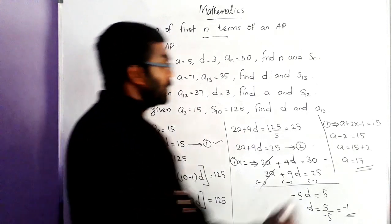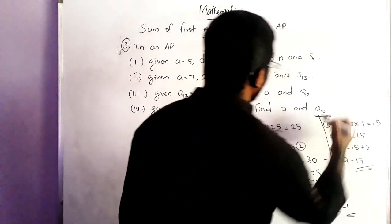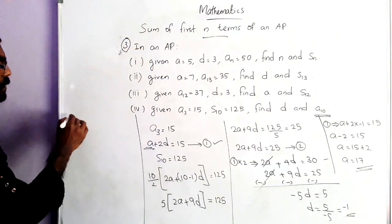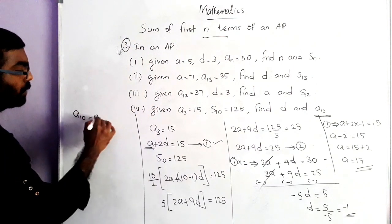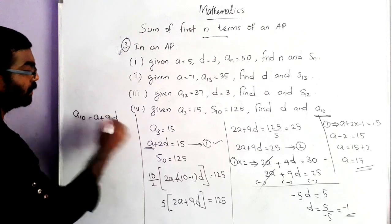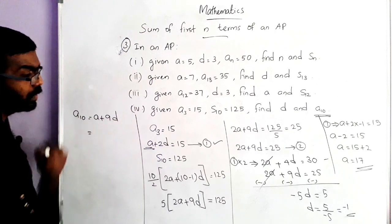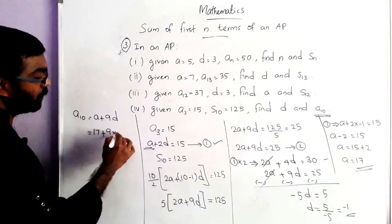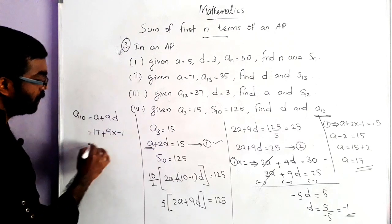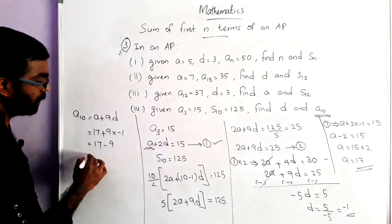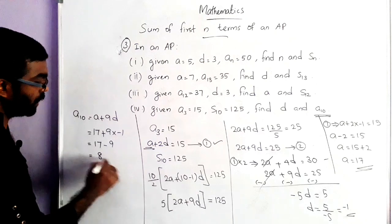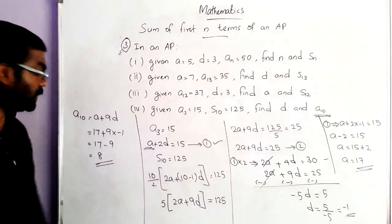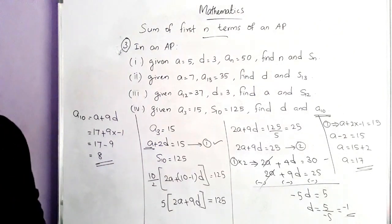We got A is equal to 17 and D is equal to minus 1. Now we can find A10, the 10th term. A10 is equal to A plus 9D. Here A is 17. So 17 plus 9 into minus 1, that is 17 minus 9, which is equal to 8. So the 10th term A10 is 8.